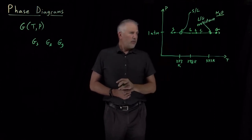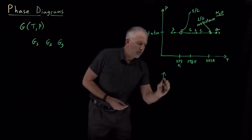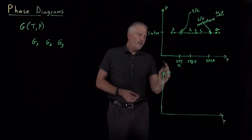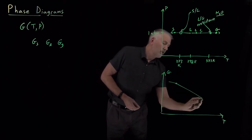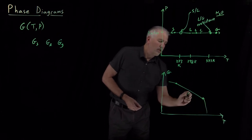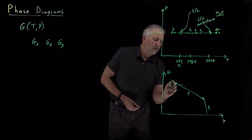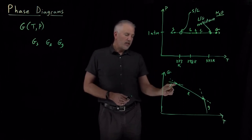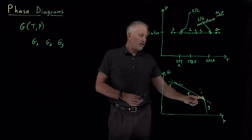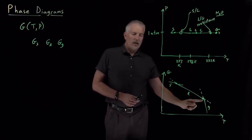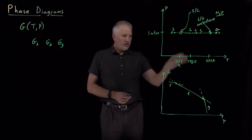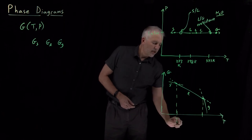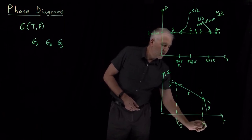That's all at one atmosphere, and it's related to the fact that the free energy changes with temperature. If I plot the value of the free energy for solid, liquid, and gas, the reason 273 K is the melting point is because that's the point at which the solid and liquid free energies become equal. The reason 373 K is the boiling point is because that's the temperature at which the liquid free energy becomes equal to the gas. So those two diagrams are connected to one another.